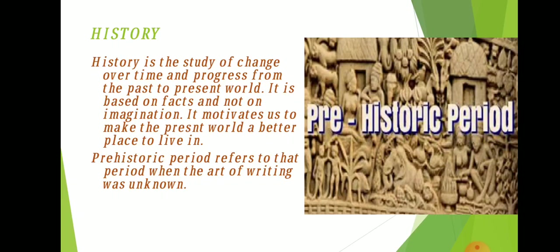Early man lived a nomadic life; he wandered in the jungle from one place to another in search of food and shelter. Our information about prehistory depends upon the remains of tools, bones, pottery and weapons that have been excavated. We learn about the age of artifacts through carbon dating. The early man was totally dependent on nature — whatever he found from nature, he used to accept it.